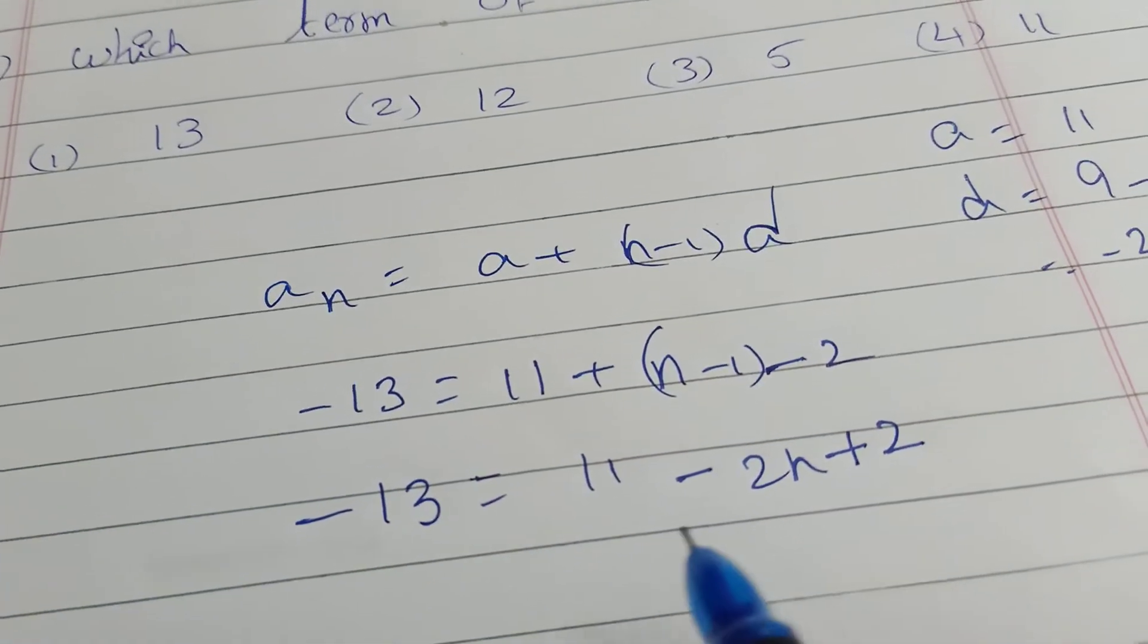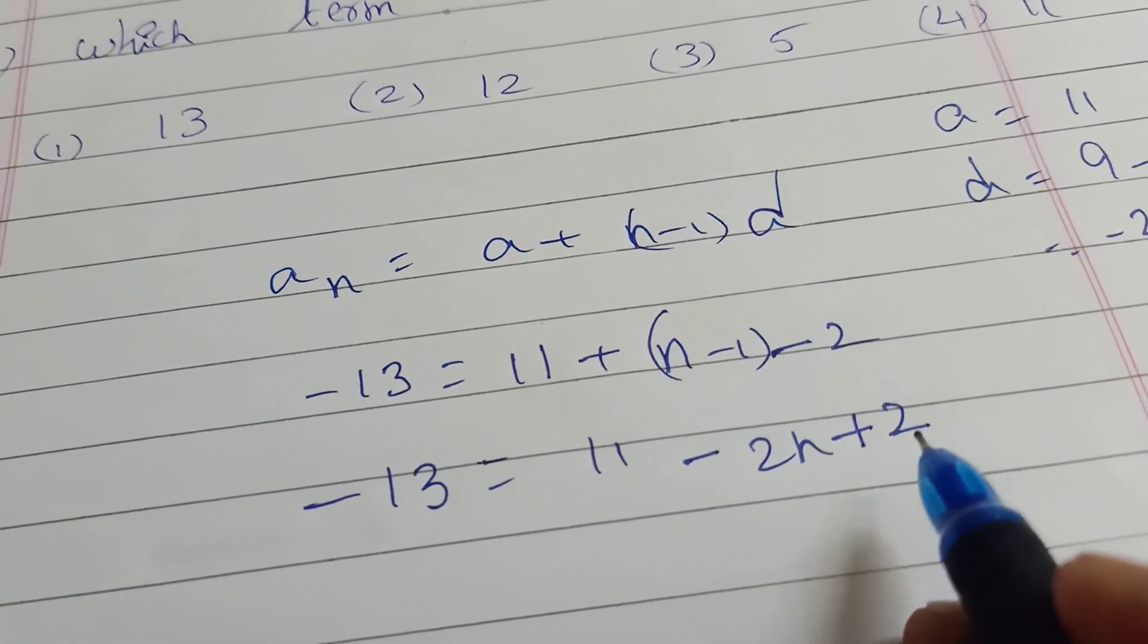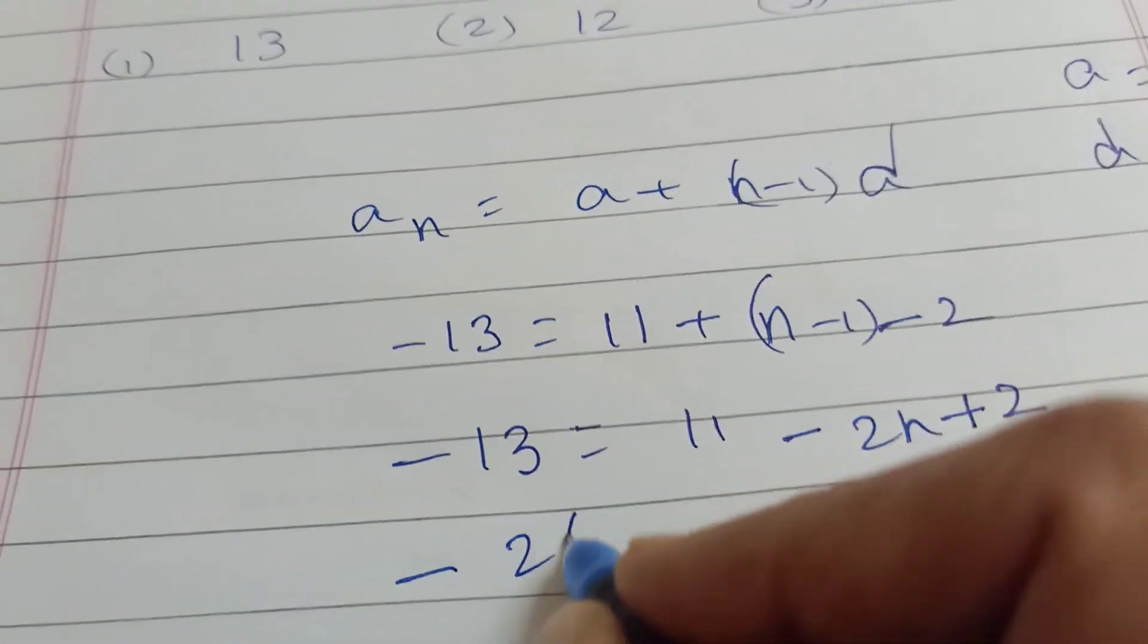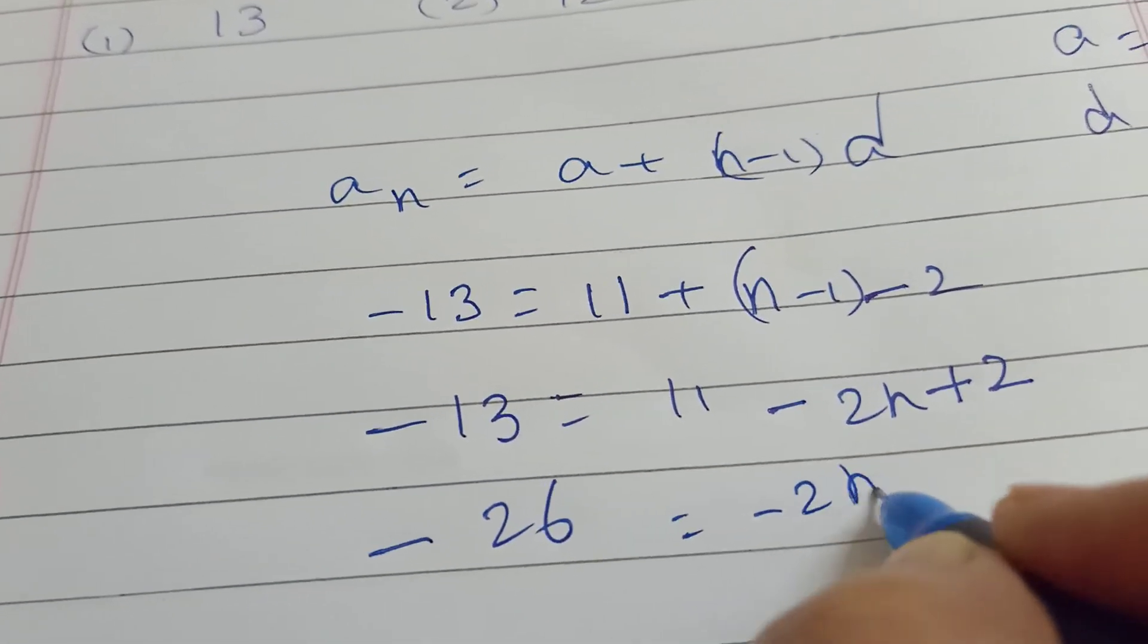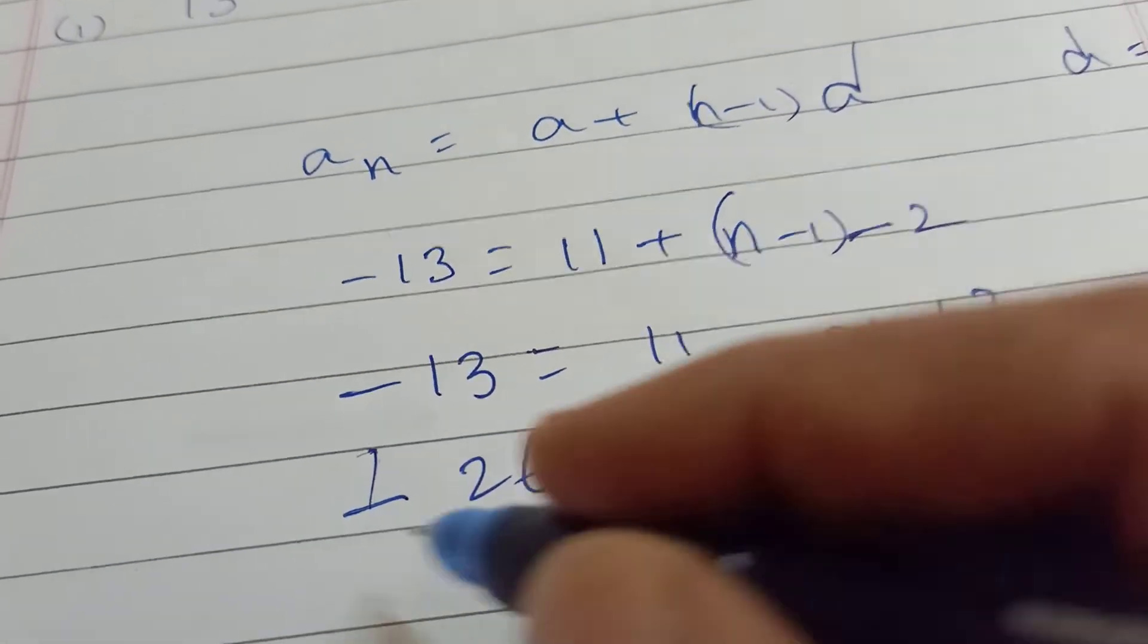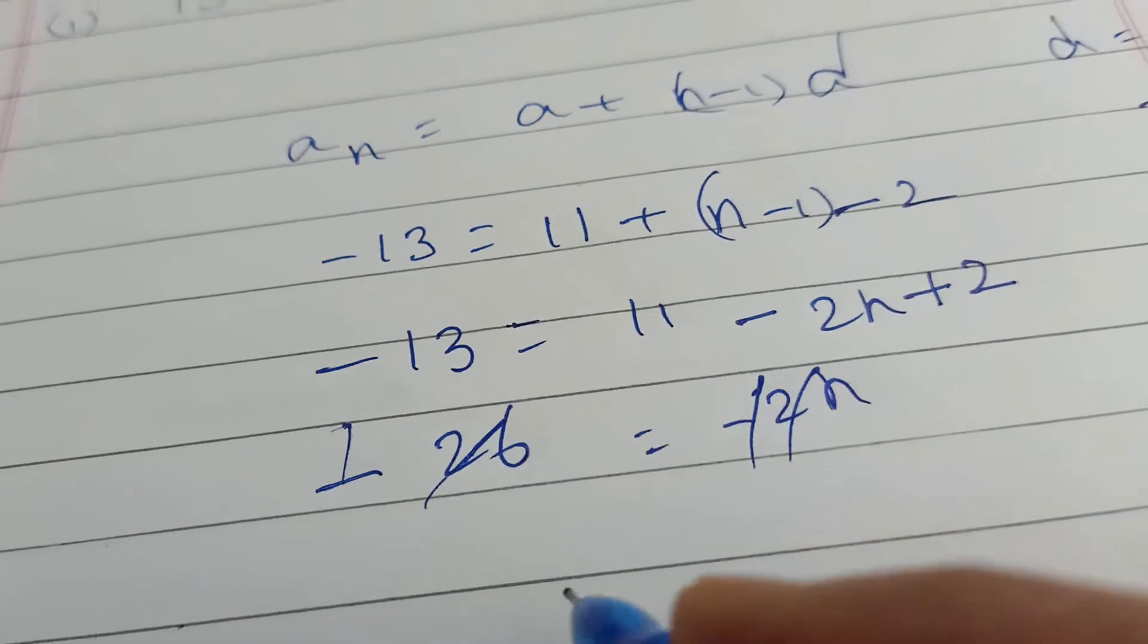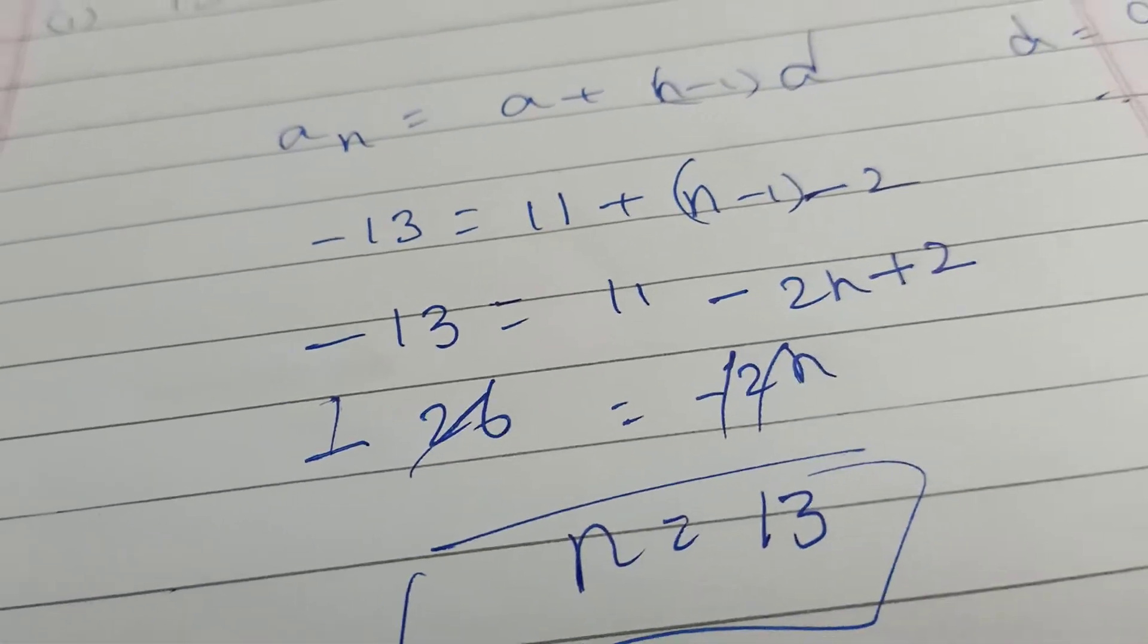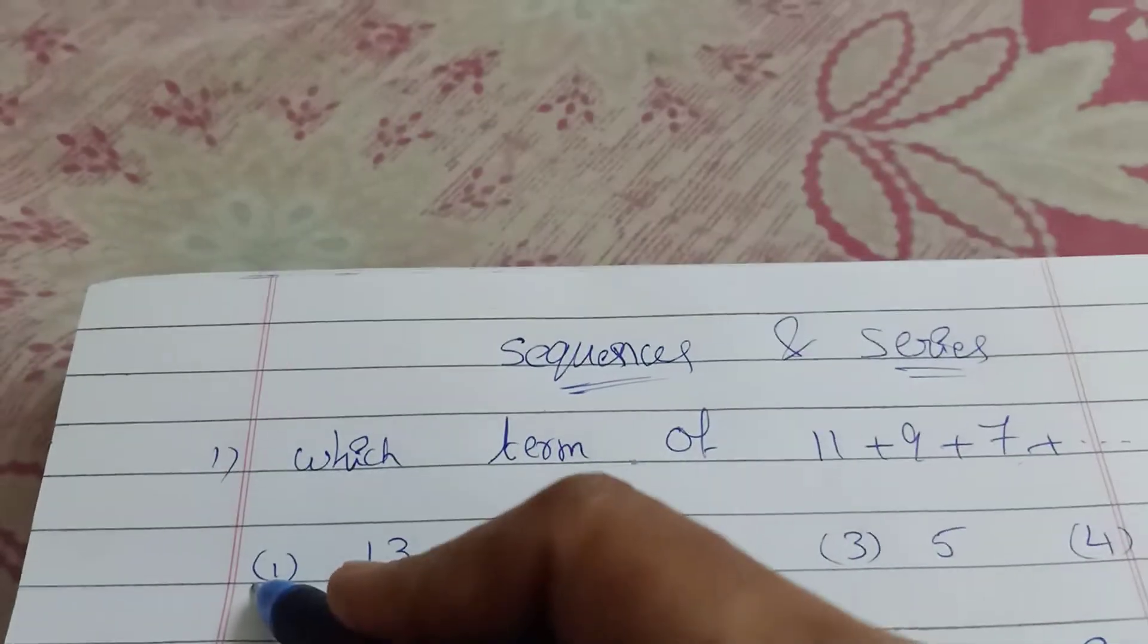Simplifying: minus 13 equals 11 minus 2n. So minus 13 minus 11 equals minus 2n. Minus 26 equals minus 2n, which gives n equals 13. The answer is the first option, n is 13.